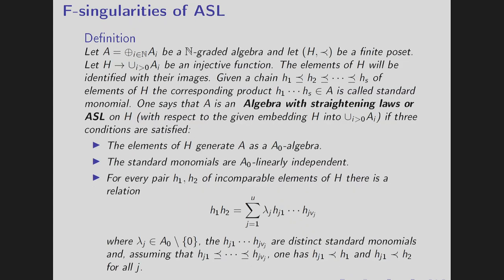Then the second one is the F-singularities of algebras with straightening law. So the definition is big. So how much time I have? Maybe five minutes? Okay. So maybe I will give the definition. So let A be an N-graded algebra and H be a finite poset. And suppose there is an injective map from H to union of AI. The elements of H will be identified with their images. Given a chain H1 less than equal to H2 less than equal to Hs of elements, we correspond to the product H1 to Hs called the standard monomial.